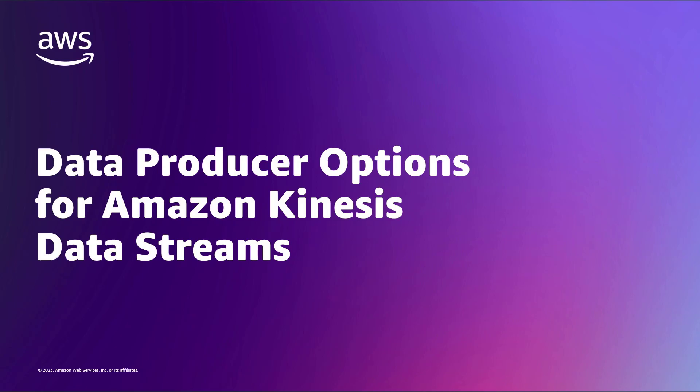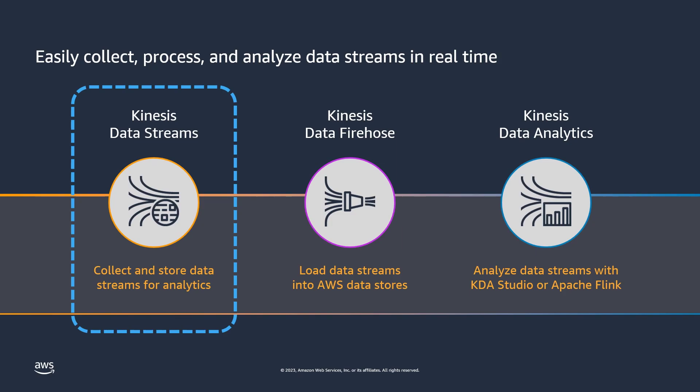In this video, you'll learn about data producer options for Amazon Kinesis Data Streams. Amazon Kinesis services enable any organization to easily collect, process, and analyze data streams in real time. Within the streaming flow, Kinesis Data Streams is used to collect and store data streams from multiple sources, or data producers, for analytics.